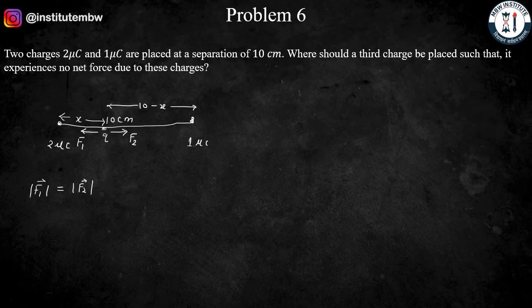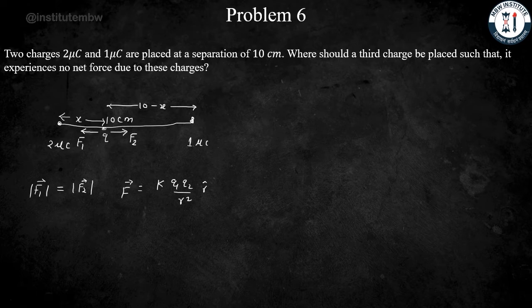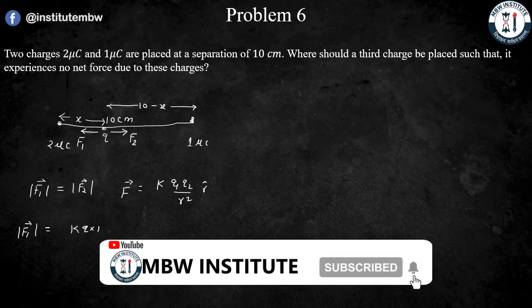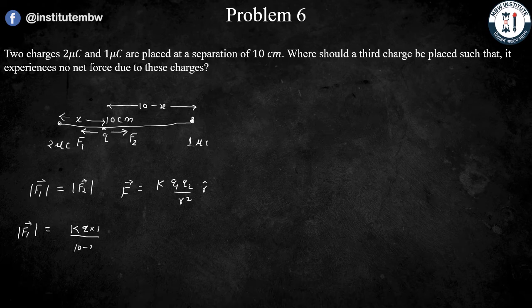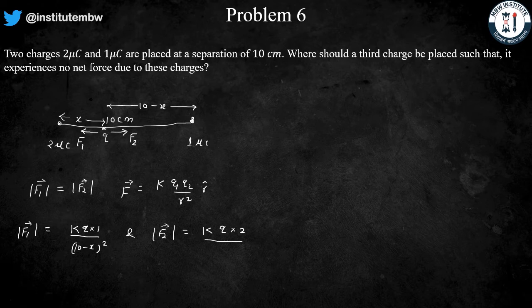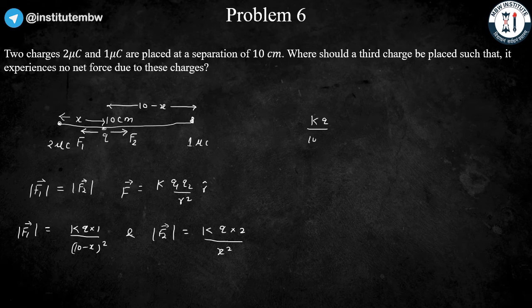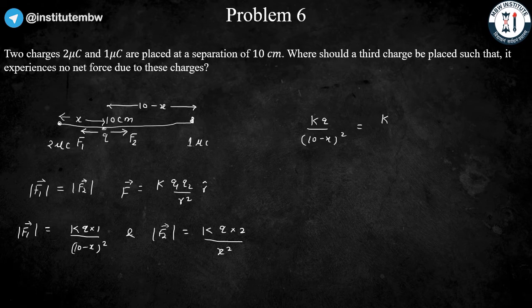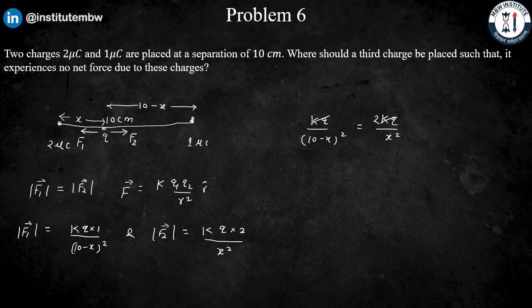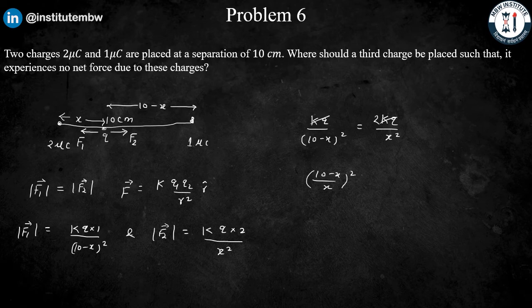That is F2 is equal to K Q1 Q2 over R squared. So we just have to equate the magnitude. So mod F1 is equal to K Q multiplied by 1 over (10 minus x) to the whole square, is equal to K times K Q over x squared. And this magnitude should be equal to K Q over (10 minus x) to the whole square equals K times 2 K Q over x squared. So after rearranging the terms and canceling the K Q, then (10 minus x over x) to the whole square is equal to 1/2.